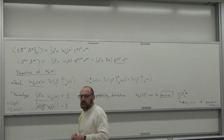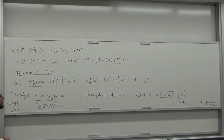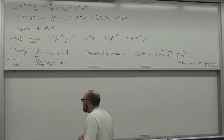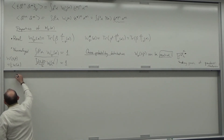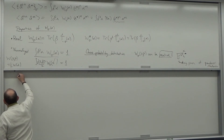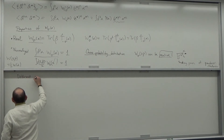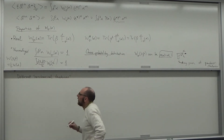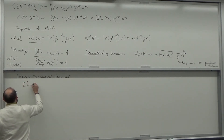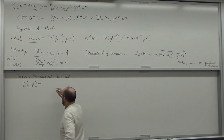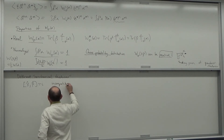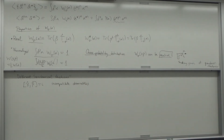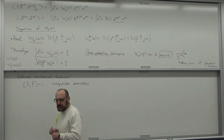Let's try to unpack this. We have different non-classical features. We have the fact that we have incompatible observables — x and p don't commute. What does that imply? There are different ways we see the implications of that fact.